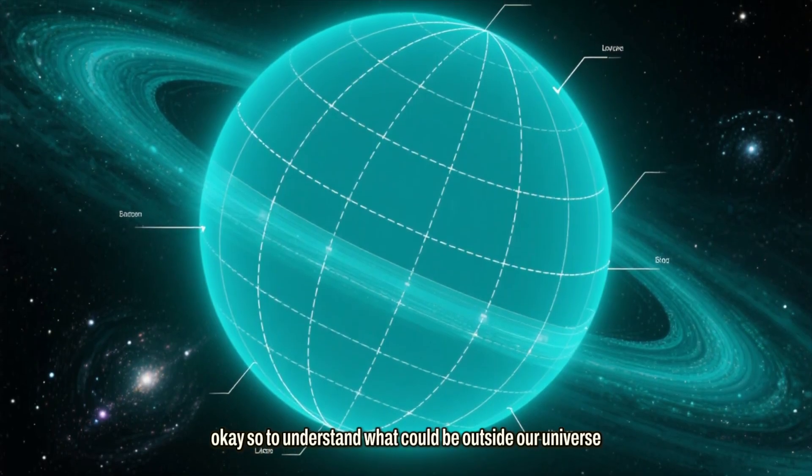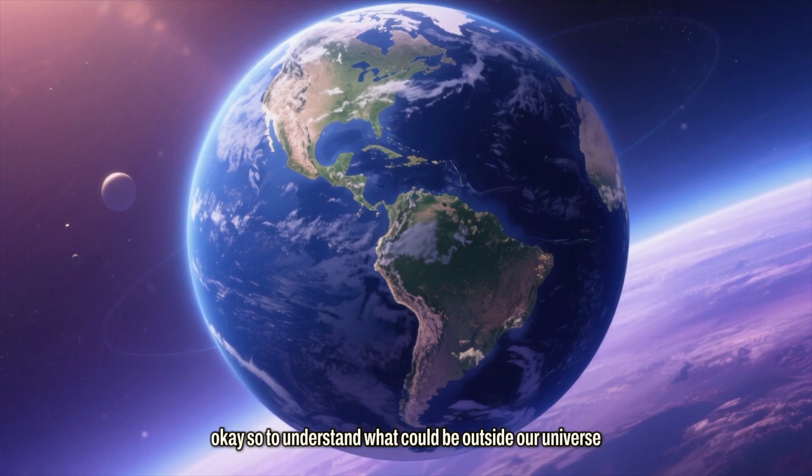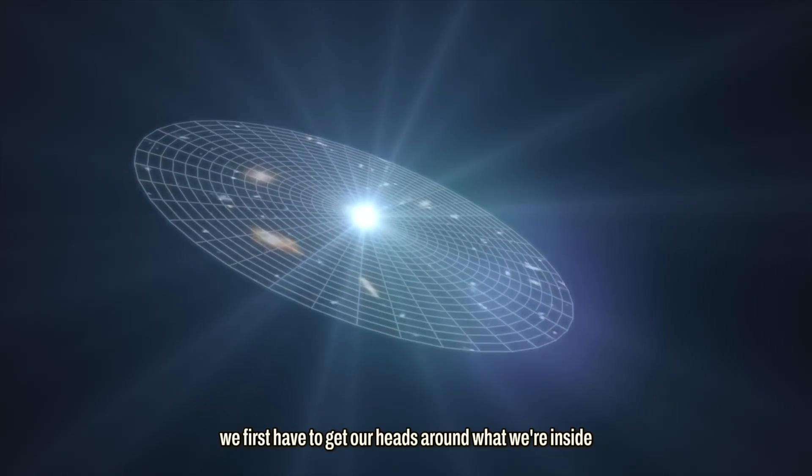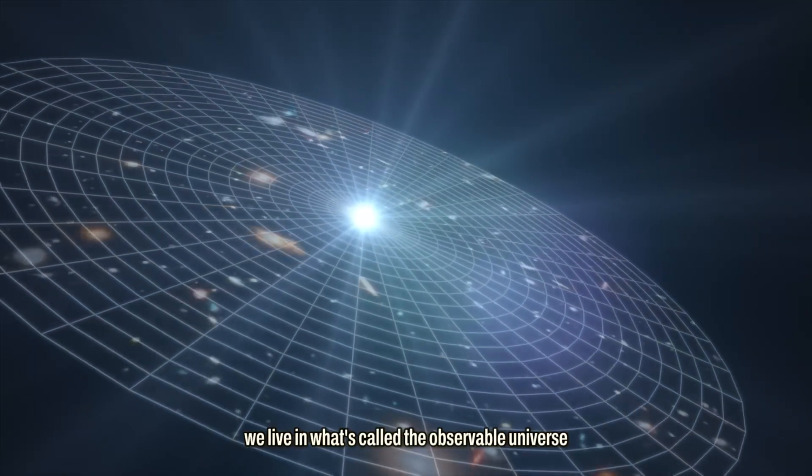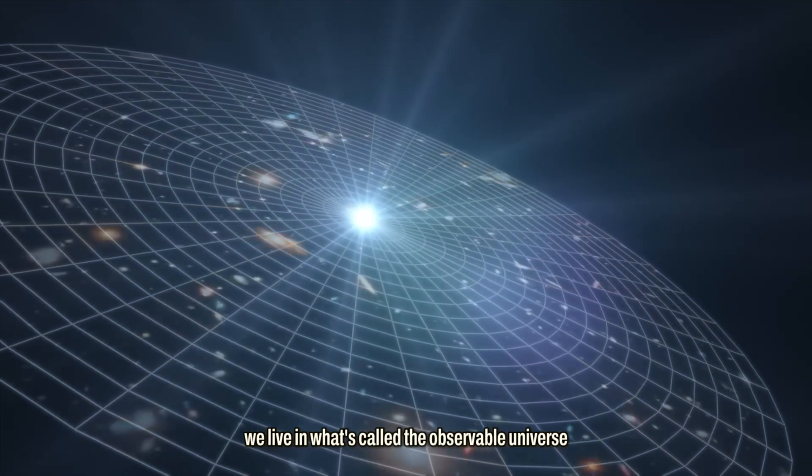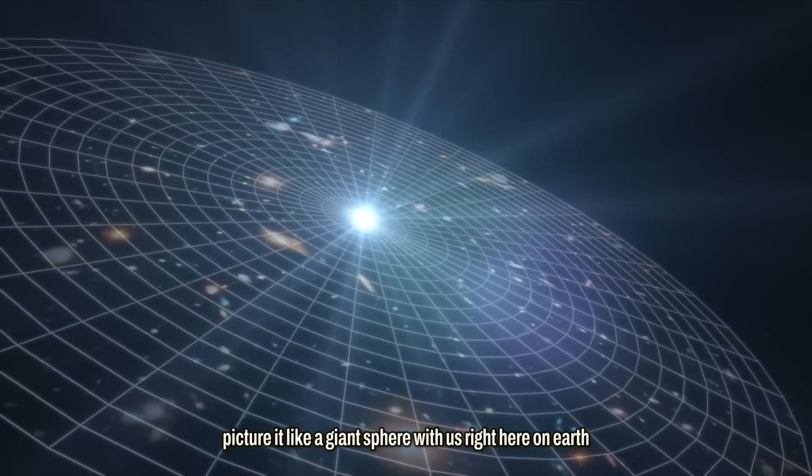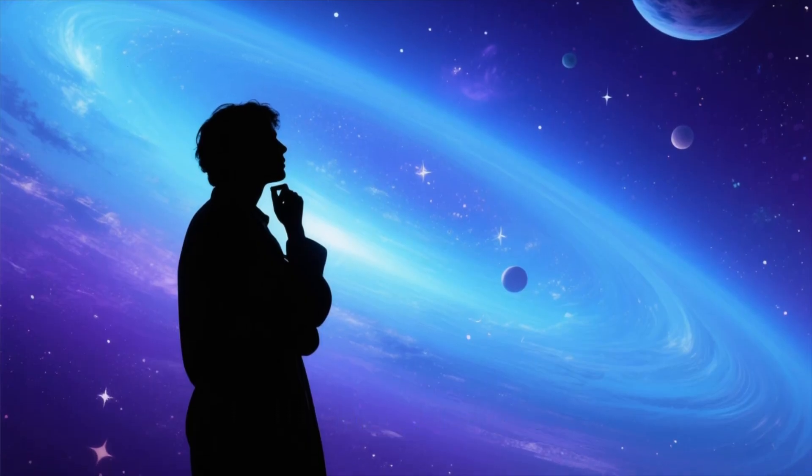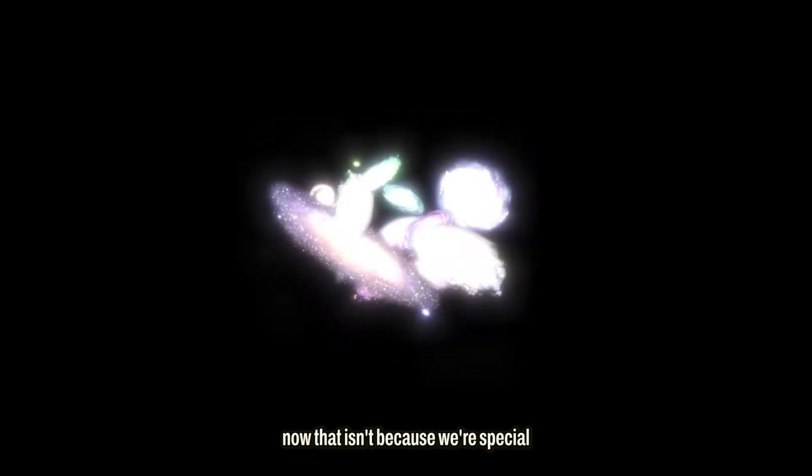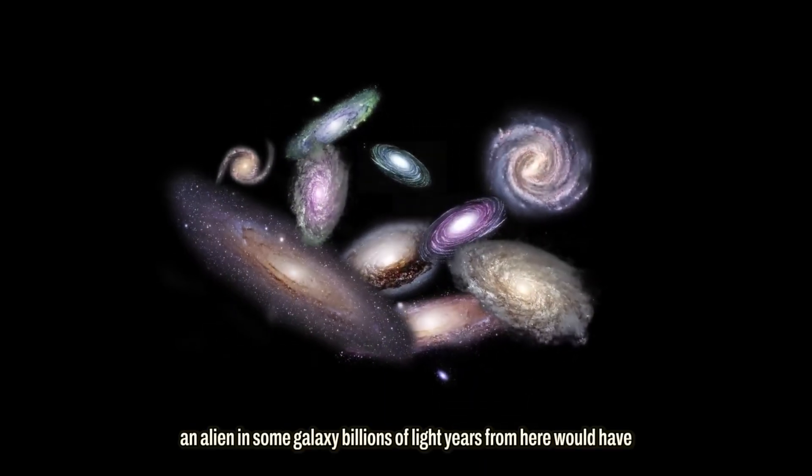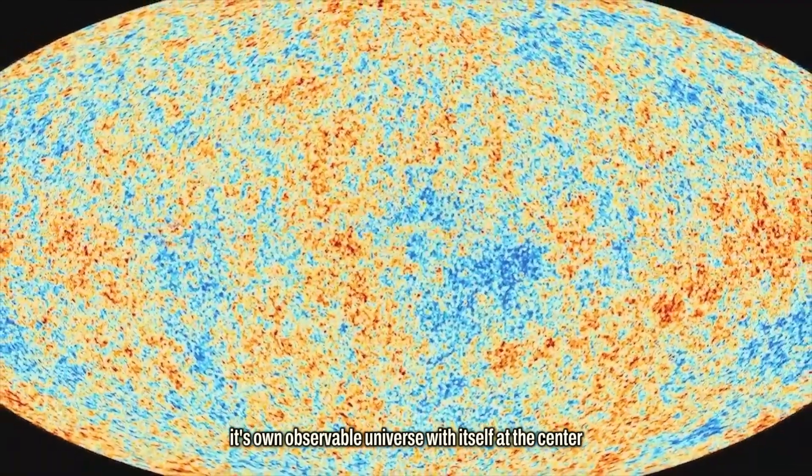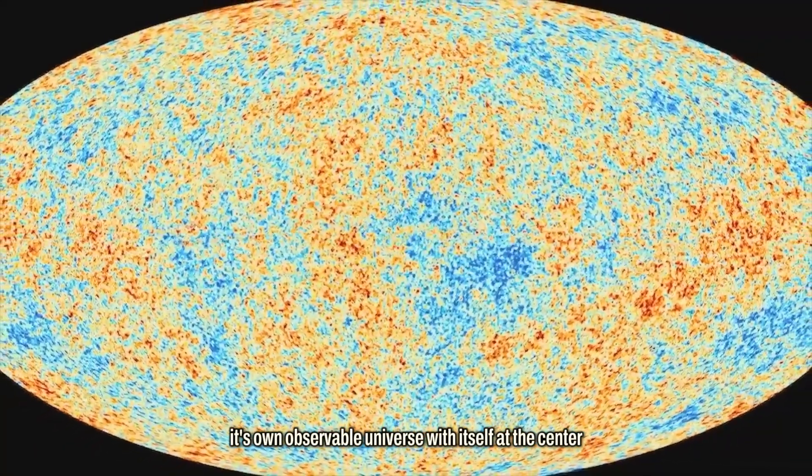Okay, so to understand what could be outside our universe, we first have to get our heads around what we're inside. We live in what's called the observable universe. Picture it like a giant sphere with us, right here on Earth, at the absolute center. Now, that isn't because we're special. An alien in some galaxy billions of light years from here would have its own observable universe, with itself at the center.